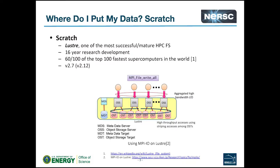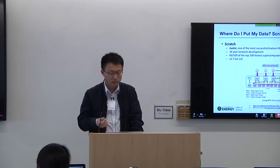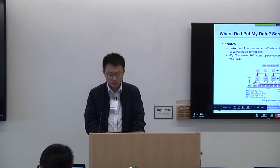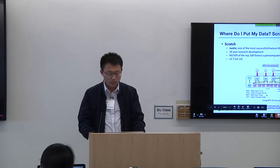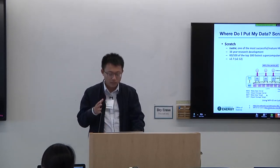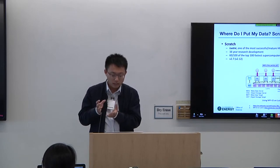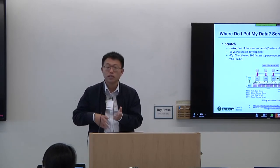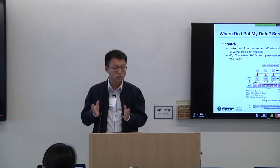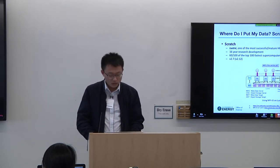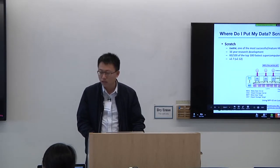To understand Scratch or Lustre, there are a few important concepts. First is the metadata server, which holds file names, directory names, and metadata. Then you have the OSS — object storage server — which manages a bunch of OSTs. OST stands for object storage target, which you can think of as a bunch of disks, basically HDDs (hard disk drives).